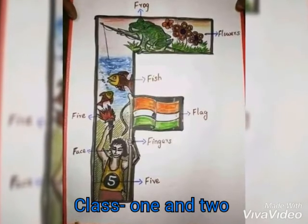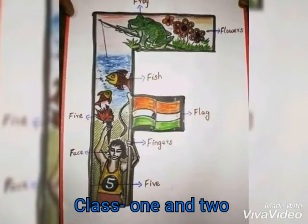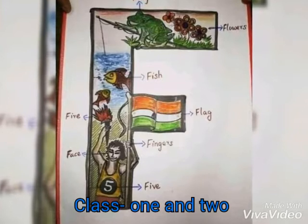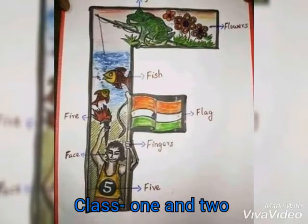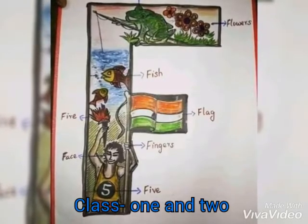F for fish, fish means mass. F for face, face means mukmandal.